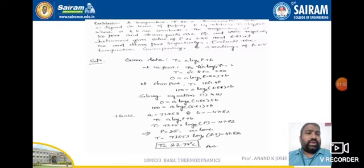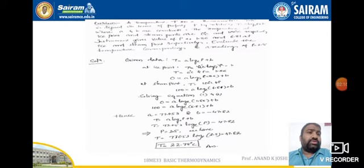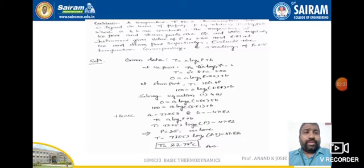Let us solve the problem. The given relation is t = a·ln(p) + b. First, at ice point: T = 0°C and P = 1.86. Substituting those values: 0 = a·ln(1.86) + b. On the other hand, for the steam point: T = 100°C and P = 6.81. So: 100 = a·ln(6.81) + b.